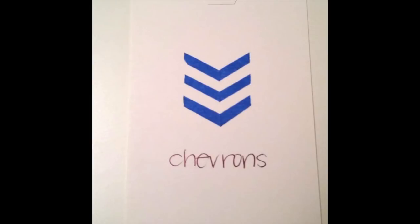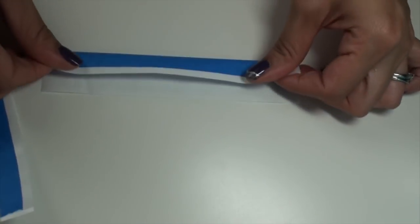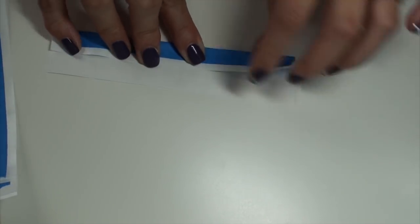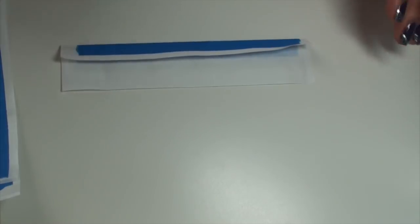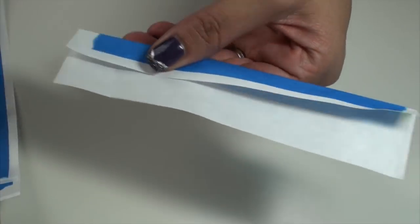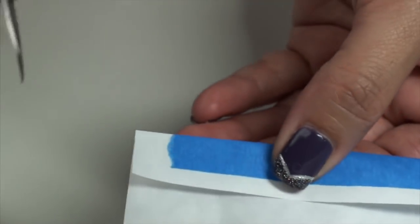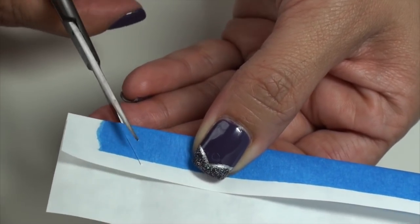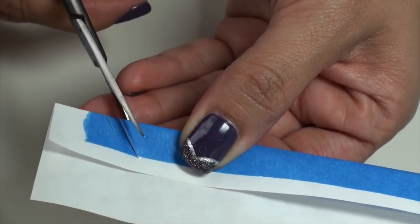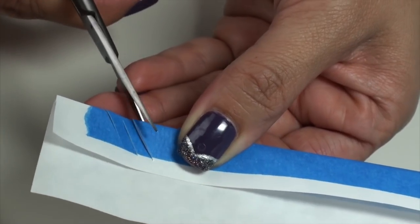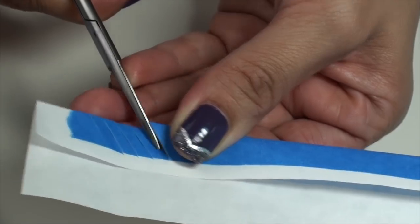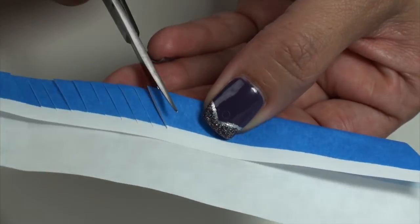Now we're going to start with the chevrons. For this first piece of painter's tape, I'm just going to fold it in half, try to match up the edges as nicely as I can, and I'm just finger pressing it down. Then I'm going to take my little pair of scissors and make diagonal cuts along the fold of the tape. Try to keep them as straight as possible. You can measure this if you want to, but I don't feel it's really necessary.